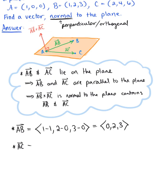And similarly for vector AC, we have 2 minus 1, 4 minus 0, and 6 minus 0, which leaves us with the vector 1, 4, 6.